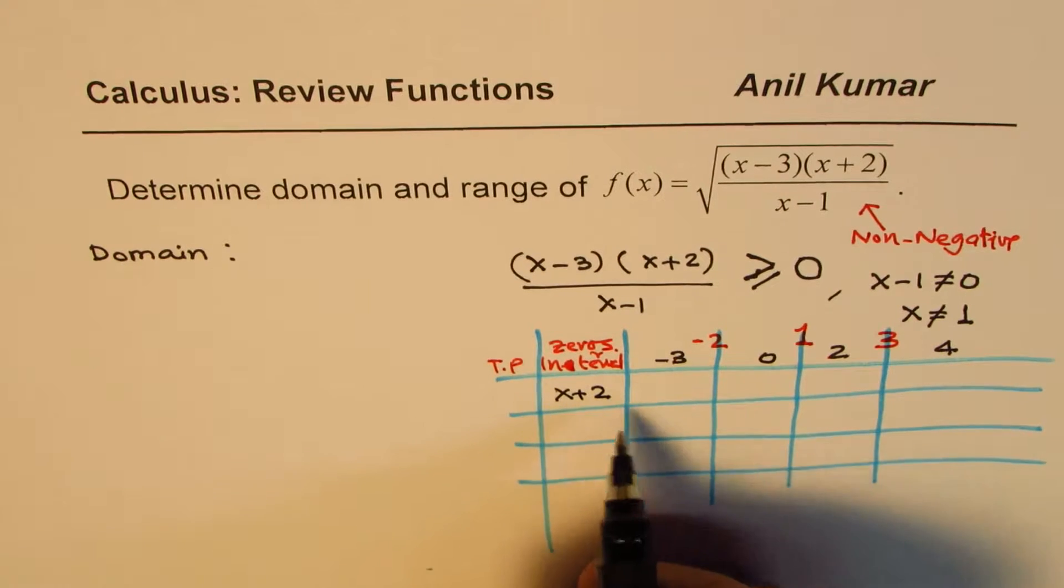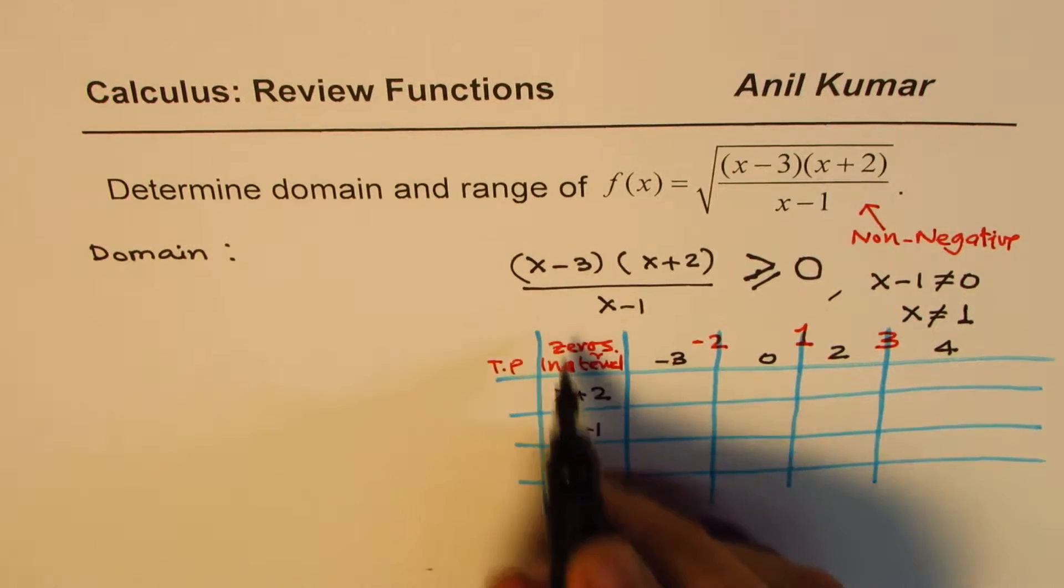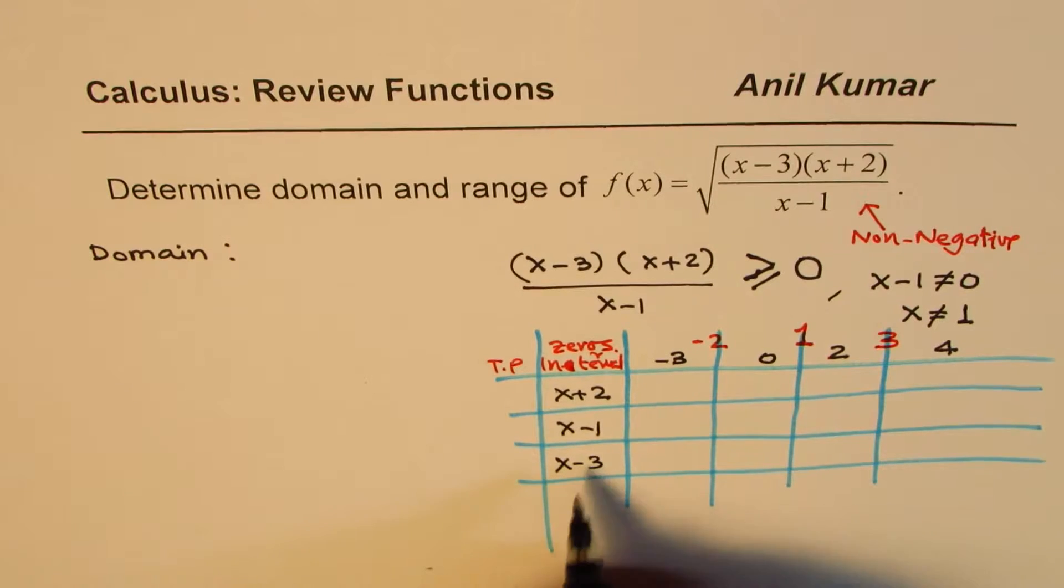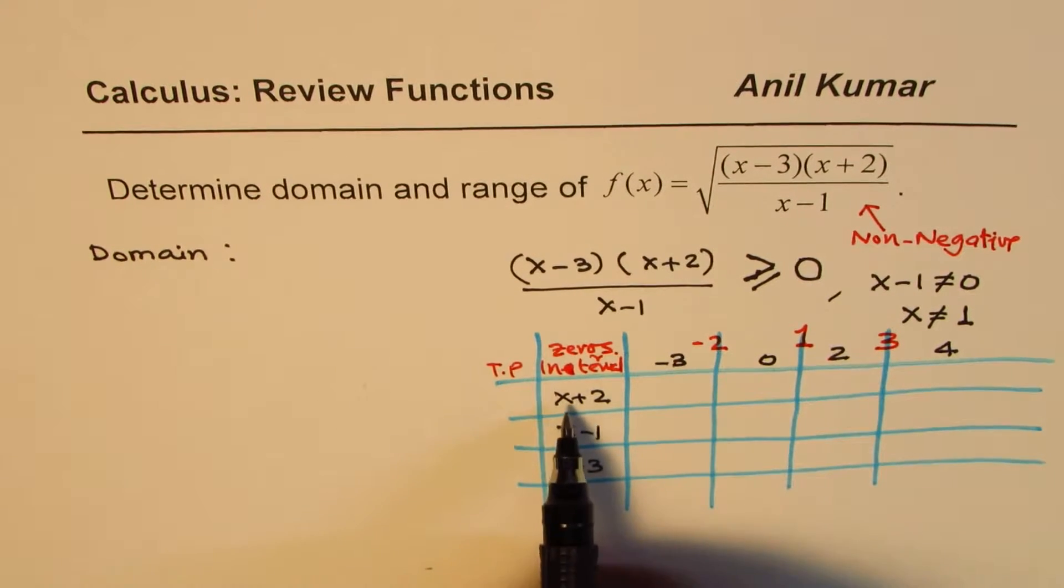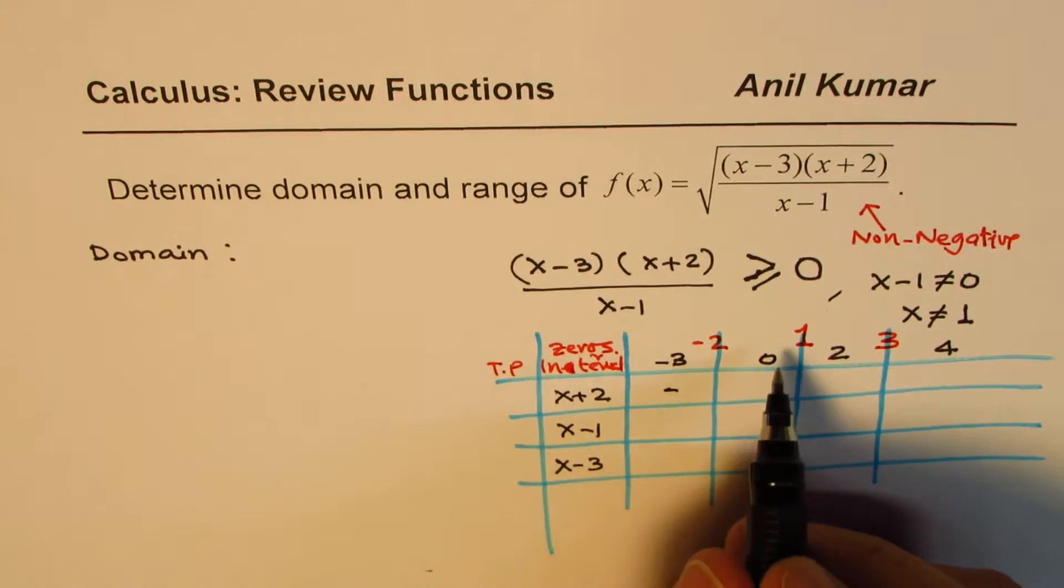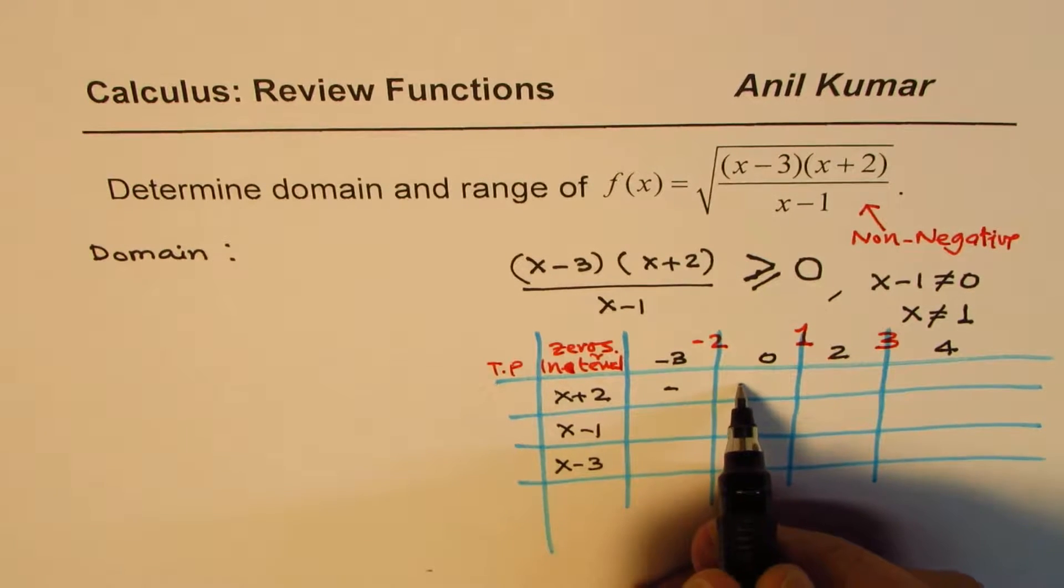So the factors for us are, let me write them in order. So we have factor x plus 2, and this 0 is because of x minus 1, and this is because of x minus 3, these three factors. If I substitute minus 3 here, I get negative. If I substitute 0, I get positive. And these will also be positive.